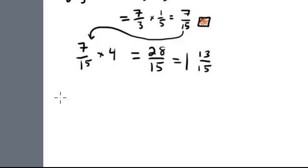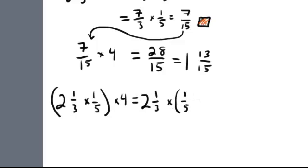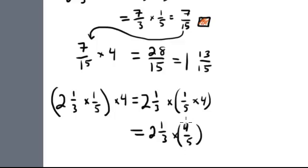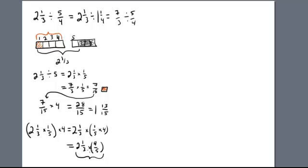This ties into the fact that I'm taking my 2 and 1 third, first dividing it by 5 — which is the same as multiplying by 1 fifth — and then taking that result and multiplying it by 4, because that's how many pieces would be in one whole dress. So that's the same as 2 and 1 third times 1 fifth times 4, which is the same as 2 and 1 third times 4 fifths. This shows that 2 and 1 third divided by 5 fourths is exactly the same as 2 and 1 third times 4 fifths — and hopefully you can see why.